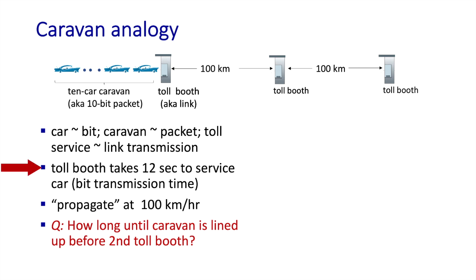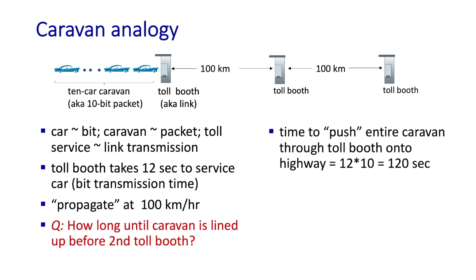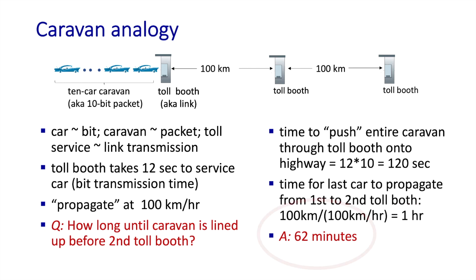To calculate a numerical example, let's assume the toll booth takes 12 seconds to service a car — equivalent to a bit transmission time — cars propagate at 100 kilometers per hour, and the toll booths are 100 kilometers apart. The time to push the entire caravan through the toll booth: 12 seconds per car times 10 cars equals 120 seconds of transmission time. The propagation delay for the last car to travel 100 kilometers at 100 km/h is 60 minutes. So the total time is 2 minutes plus 60 minutes, equaling 62 minutes.